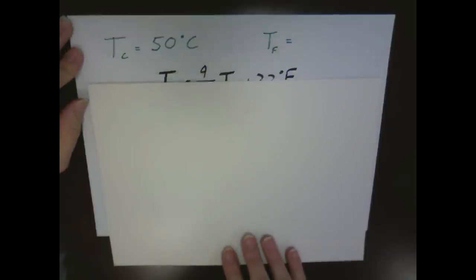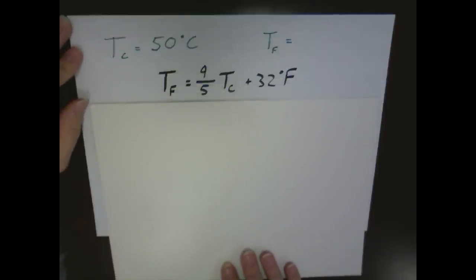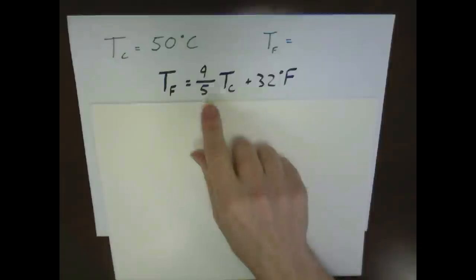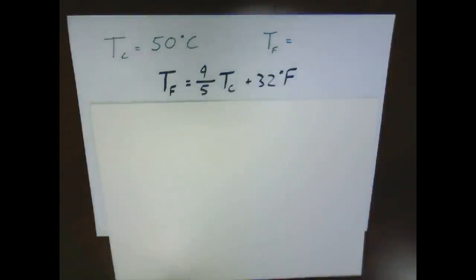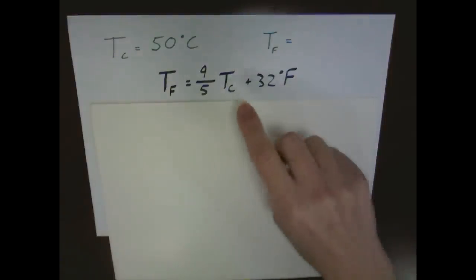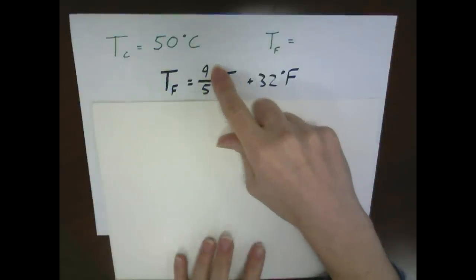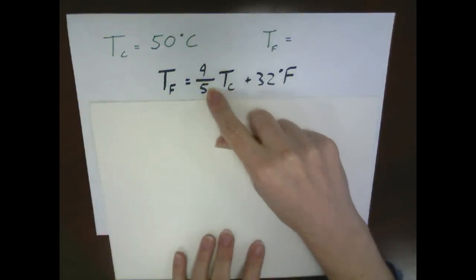The basic equation we have for converting Celsius to Fahrenheit is TF = 9/5 Tc + 32°F. And this 9/5 is 9 degrees Fahrenheit for every 5 degrees Celsius in terms of the scale size of those.